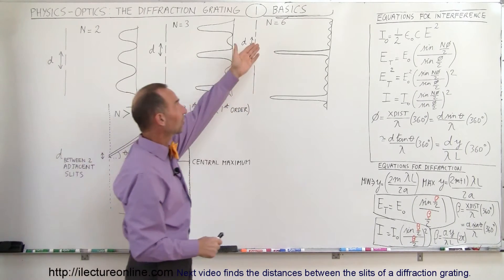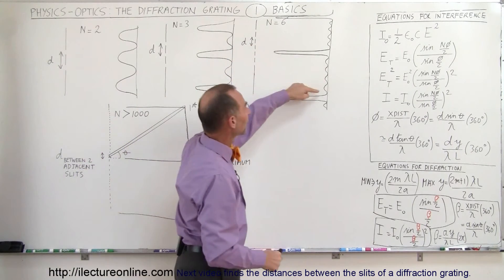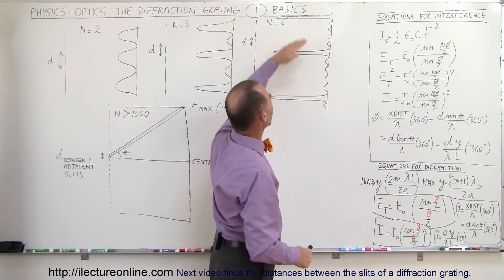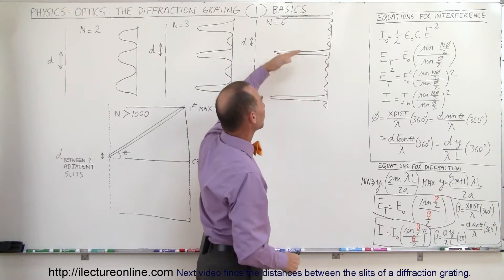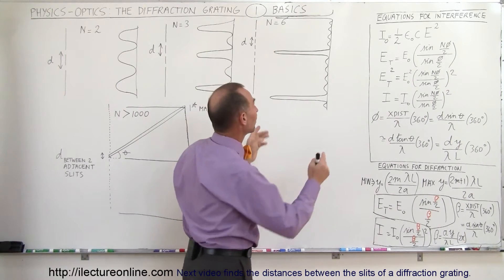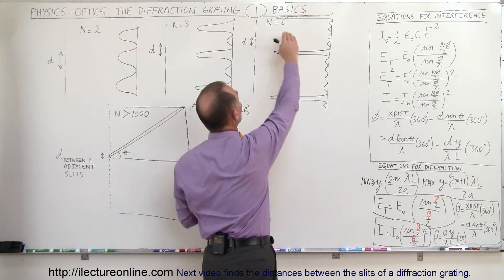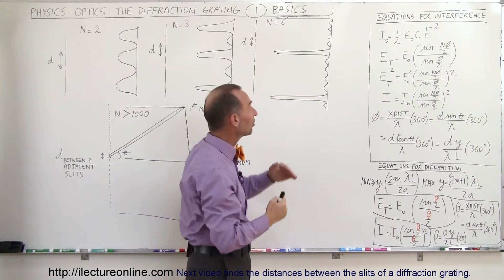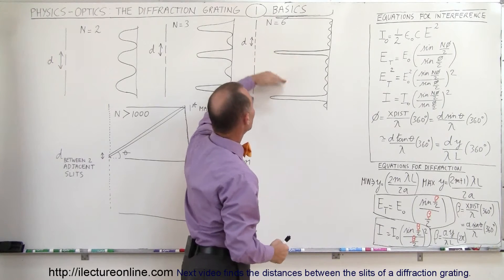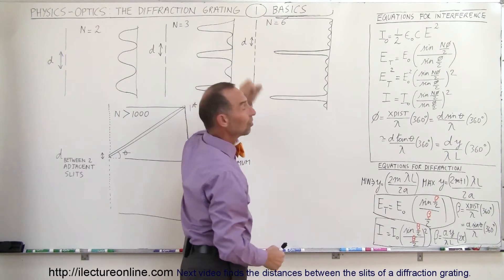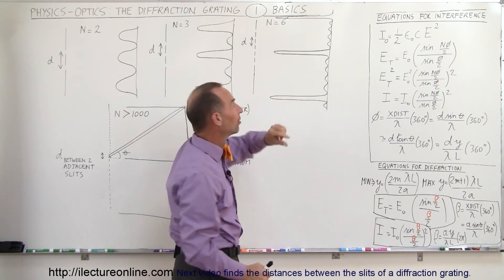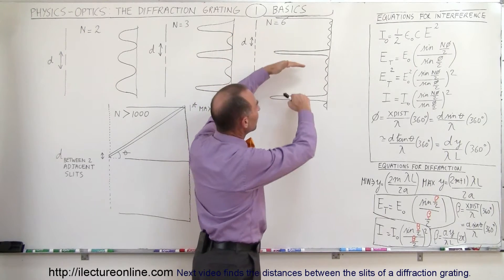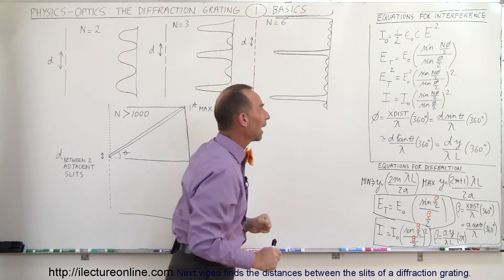With six slits we had four intermediary maxima. The central maxima and the first maxima on either side are much larger in intensity — with six slits this would be 36 times the intensity of a single slit. Again the distance between them depends upon the separation distance between the slits; as the separation distance becomes less, the maxima are farther apart.